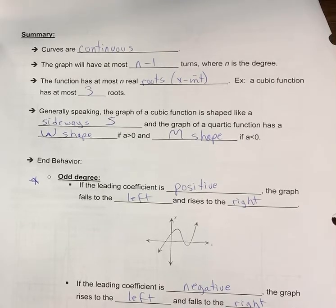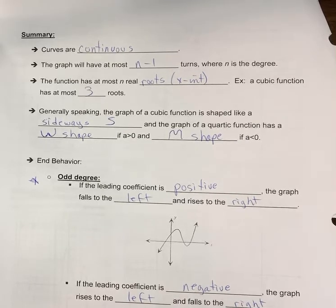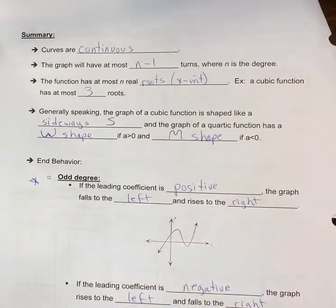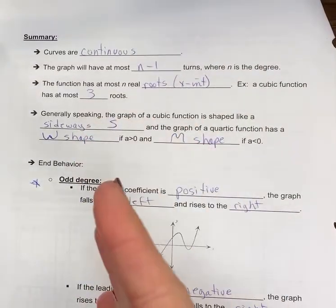The function has at most n real roots, roots meaning x-intercepts. For example, a cubic function has at most three roots. It could have two or one.